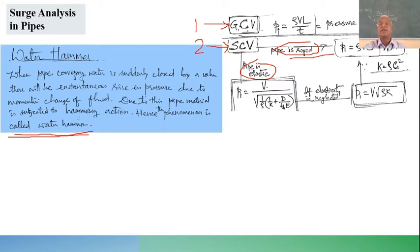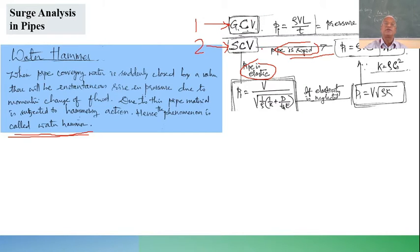If the pipeline is elastic, the pressure increase is given by V divided by √(1/ρ · (1/K + D/(t·E))). If the elasticity of the pipe is neglected, this reduces back to the rigid pipe formula. So first identify whether it is gradual or sudden closure. Gradual closure: P_i = ρVL/t. Sudden closure: rigid pipe gives ρVc; elastic pipe uses the full elastic formula.